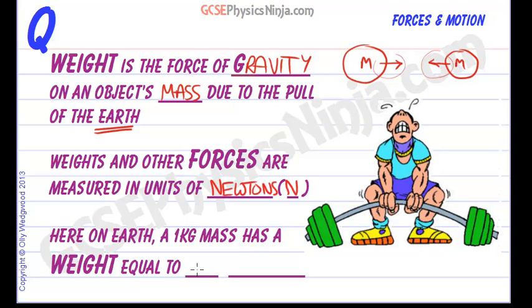Now here on Earth, a 1 kilogram mass has a weight equal to 10 or about 10 Newtons. It's actually about 9.81 but 10 will do for us at GCSE.